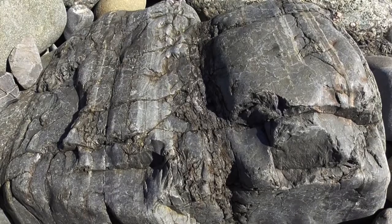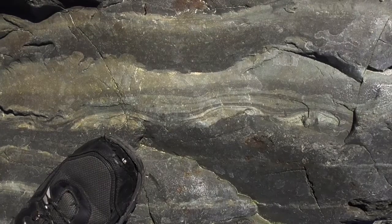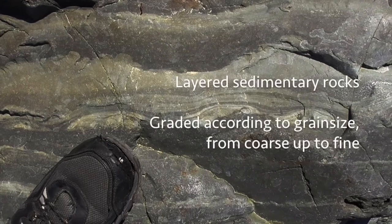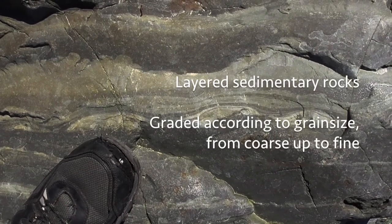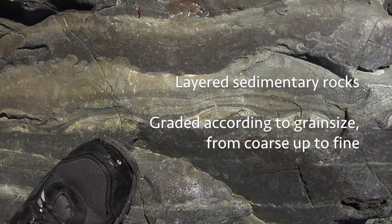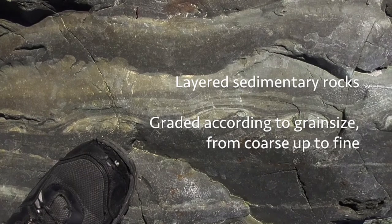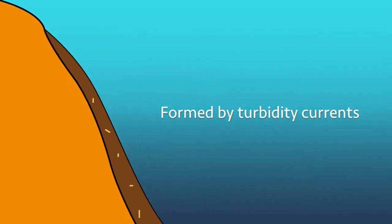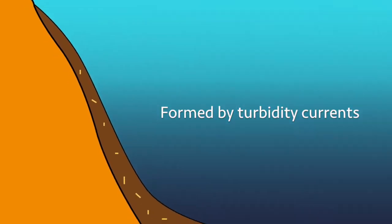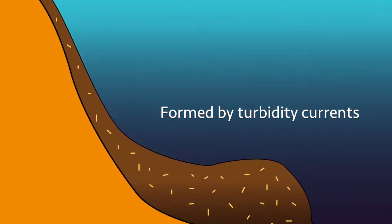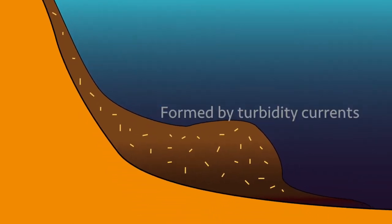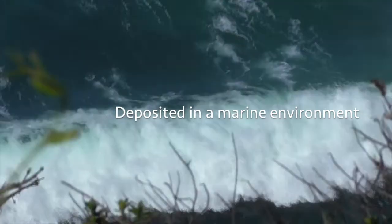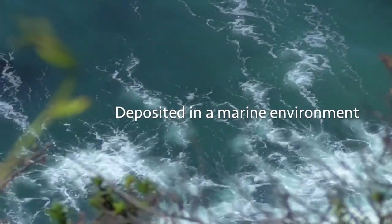Now we know the most important things about turbidites. They are layered sedimentary rocks in which different sizes of sediment are arranged from coarse at the bottom to fine at the top. They are formed by high density currents in which those sediments are mixed with water. And finally, they are laid down in the ocean, sometimes all the way down on the abyssal plain.